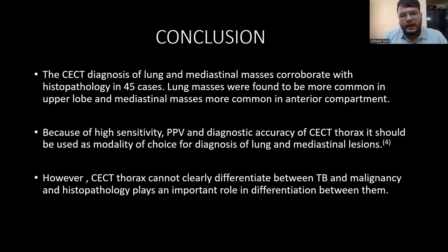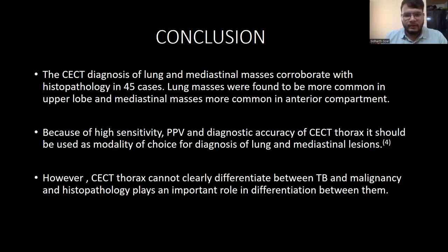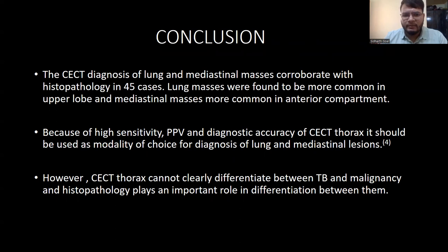In conclusion, CECT diagnosis of lung and mediastinal masses corroborated with histopathology in 45 out of 50 cases. Lung masses were more commonly seen in the upper lobe, and mediastinal masses were more commonly found in the anterior compartment. Due to its high sensitivity, specificity, and positive predictive value, CECT was found to have good diagnostic accuracy and was recommended as the modality of choice. However, in cases where differentiation between TB and malignancy was required, histopathology played a more important role, as CECT was non-specific in those scenarios.